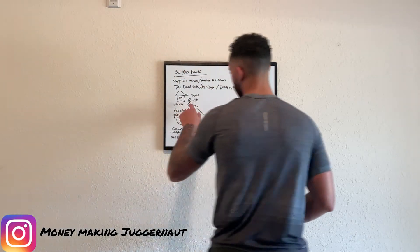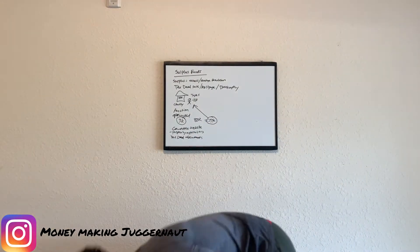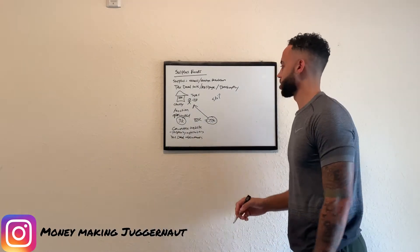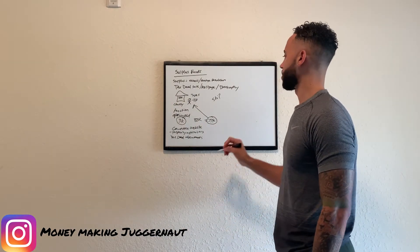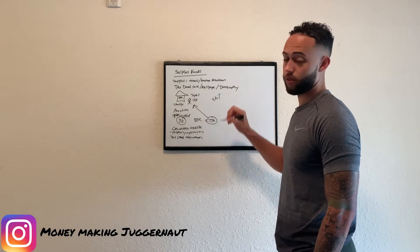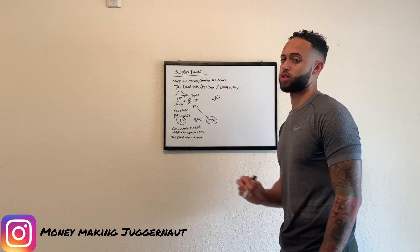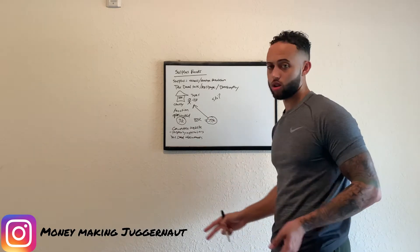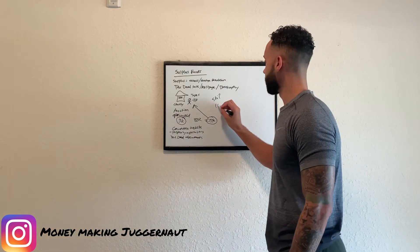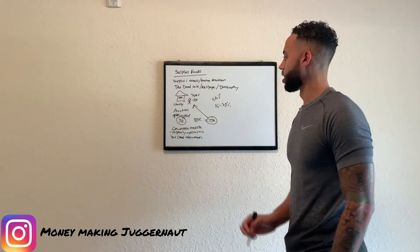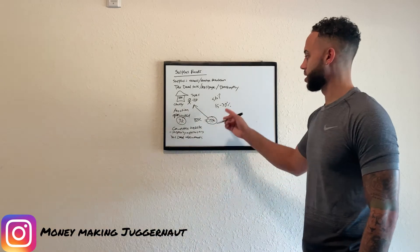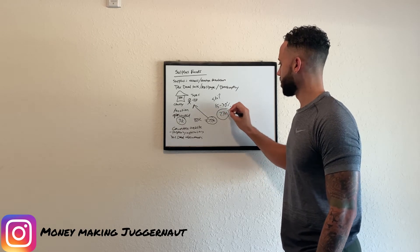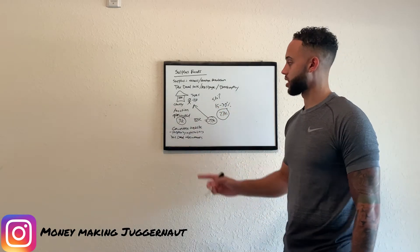So after we figure out who the previous owner is and we know they're owed money, what we're going to do is skip trace them. There are many websites you can use for skip tracing. We find the owner, get their phone number, and reach out to them. The best way is cold calling — you get them on the phone, you explain what we do. We don't charge any upfront fees; we handle all attorney fees. We do charge a percentage on the back end, typically 15 to 30%. So at just 10% on $77,000, that's $7,700 — a fee you've just made for assisting them with getting their funds.